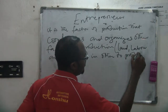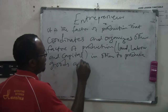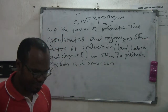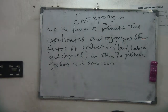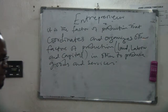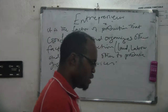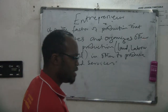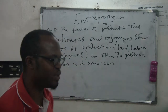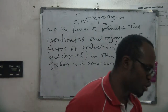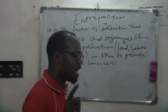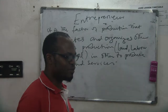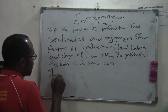The entrepreneur is the factor of production that coordinates and organizes the other factors of production — which are land, labor, and capital — in order to produce goods and services.